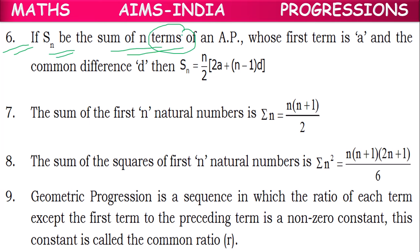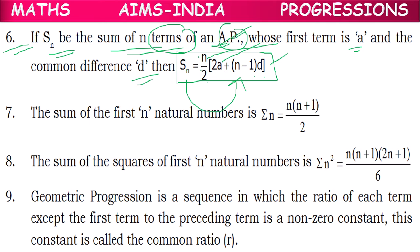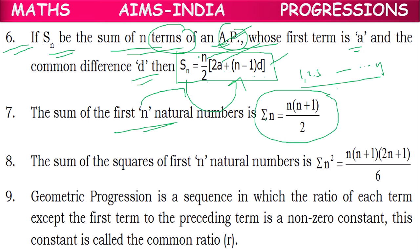If Sn is the sum of n terms of an AP whose first term is 'a' and common difference is 'd', then the formula is: Sn = (n/2) × [2a + (n−1)d], where n is the number of terms, a is the first term, and d is the common difference. From this formula, the sum of the first n natural numbers (1, 2, 3, … up to n) simplifies to sigma n = n(n+1)/2.